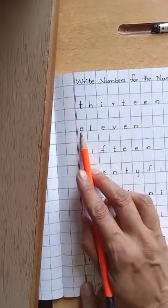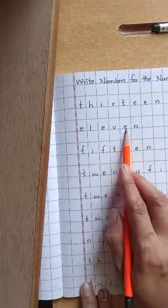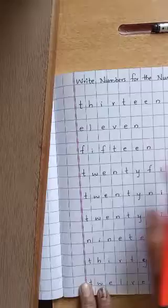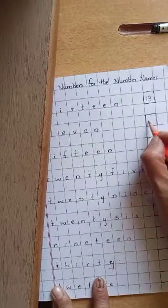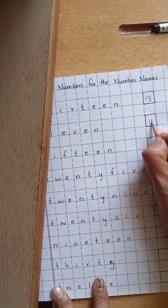Next one is 11. E-L-E-V-E-N. 11. You have to write here. Which number do you have to write here? 11. Okay.